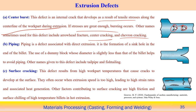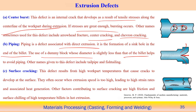Piping defect is associated with the direct extrusion process. It is the formation of a sinkhole at the end of the billet. Using a dummy block whose diameter is slightly less than that of the billet helps to avoid the piping effect. Other names for the piping defect include tail pipe and fish tailing.